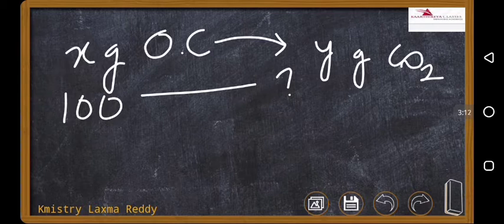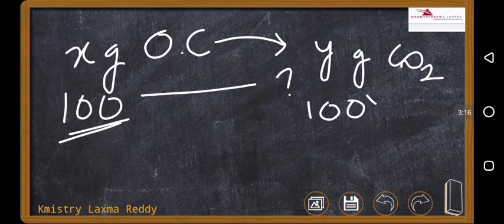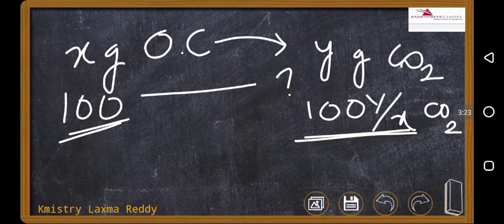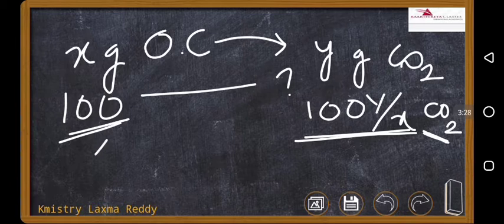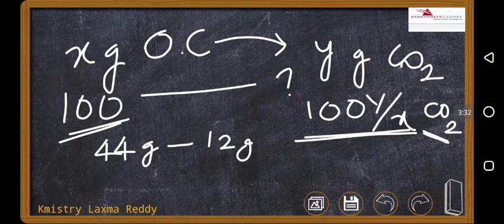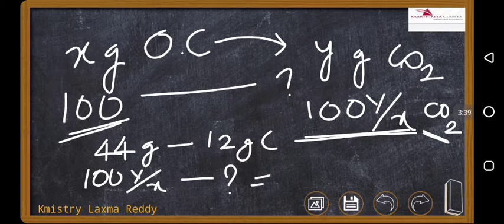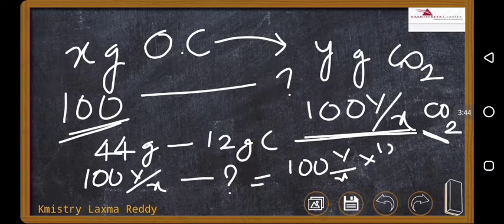So, percentage we want to calculate. So, how much it is going to be? How many grams of CO2 is there if 100 grams of organic compound is there? 100 y by x, right? Grams of carbon dioxide. But we want to calculate the percentage of carbon, not carbon dioxide. This is percentage of carbon dioxide. In carbon dioxide, if you have 44 grams of carbon dioxide, it contains 12 grams of carbon. If you have 100 y by x gram of carbon dioxide, it contains how much?